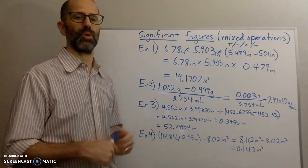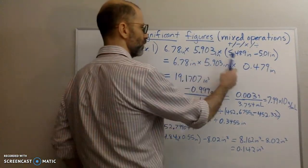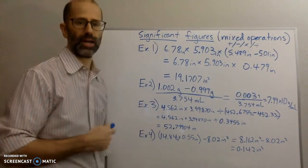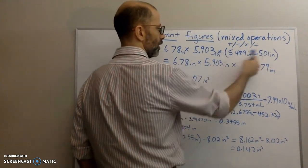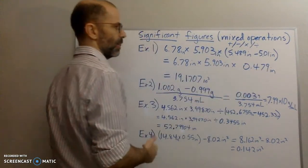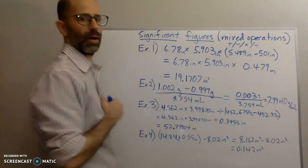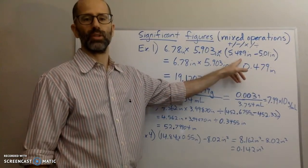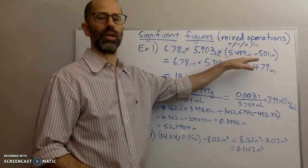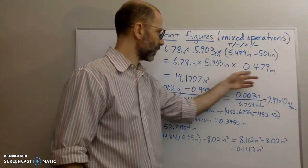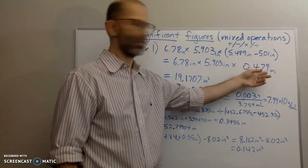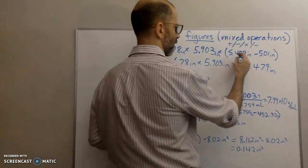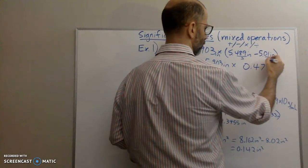So which rule applies? Well, it's a combination of both. What we have to do is first do what's in the parentheses — here we need to subtract first. When we subtract these two measures, we get this answer, and because we subtracted, we use the rule regarding decimal places. To figure out how many decimal places I'm allowed to keep, I go back to these two values. I have three decimal places here and two decimal places there.